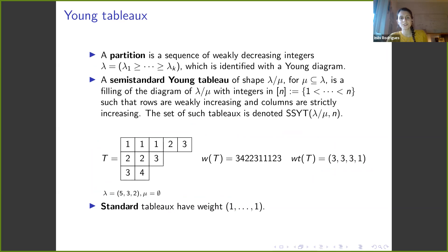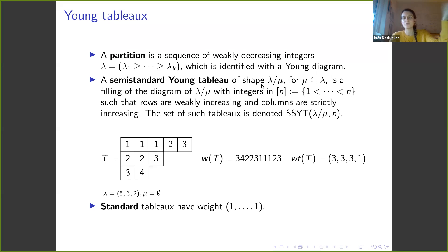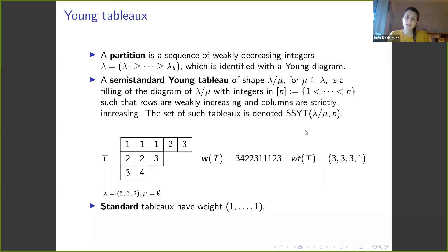To recall what a Young tableau is: a partition is a sequence of weakly decreasing integers, identified with a Young diagram where we place Lambda_1 boxes in the first row, Lambda_2 in the second, etc., left justified using English (matrix) notation. A semi-standard Young tableau of a skew shape fills boxes with integers from 1 to n such that rows are weakly increasing and columns are strictly increasing. We denote the set of such tableaux accordingly.